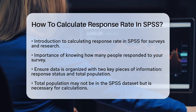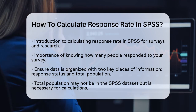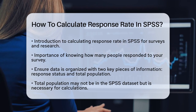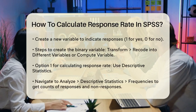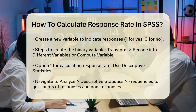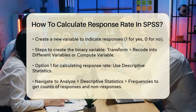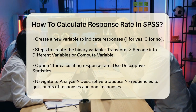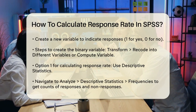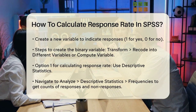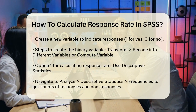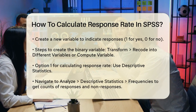Next, you might need to create a new variable in your dataset to indicate whether each case is a response or not. To do this, go to Transform > Recode into Different Variables or Compute Variable. Here, you can create a binary variable where one indicates a response and zero indicates no response.